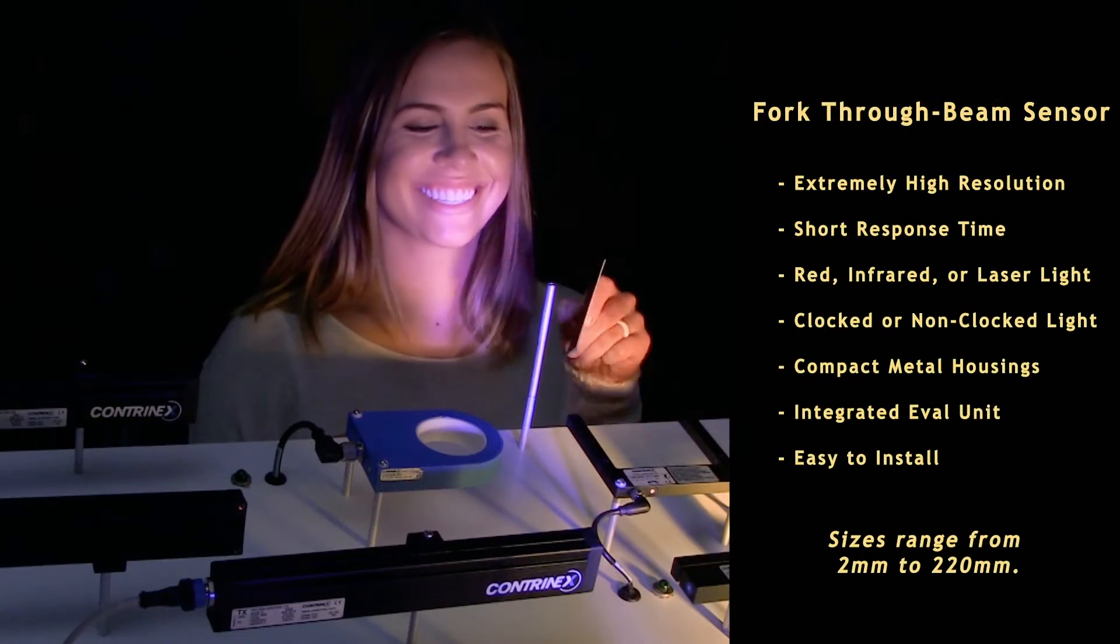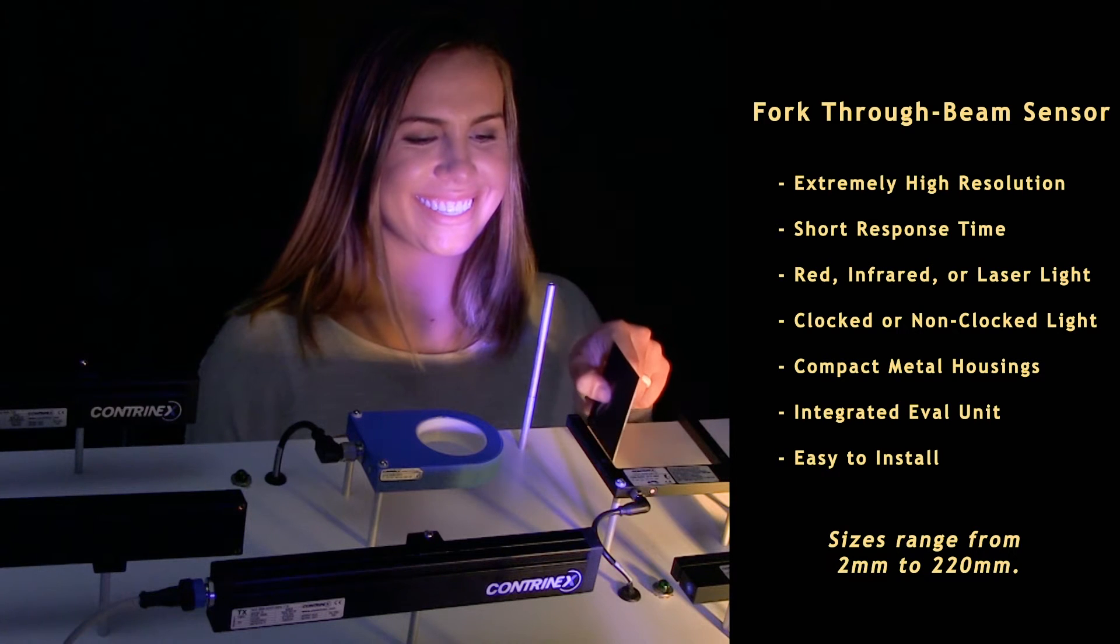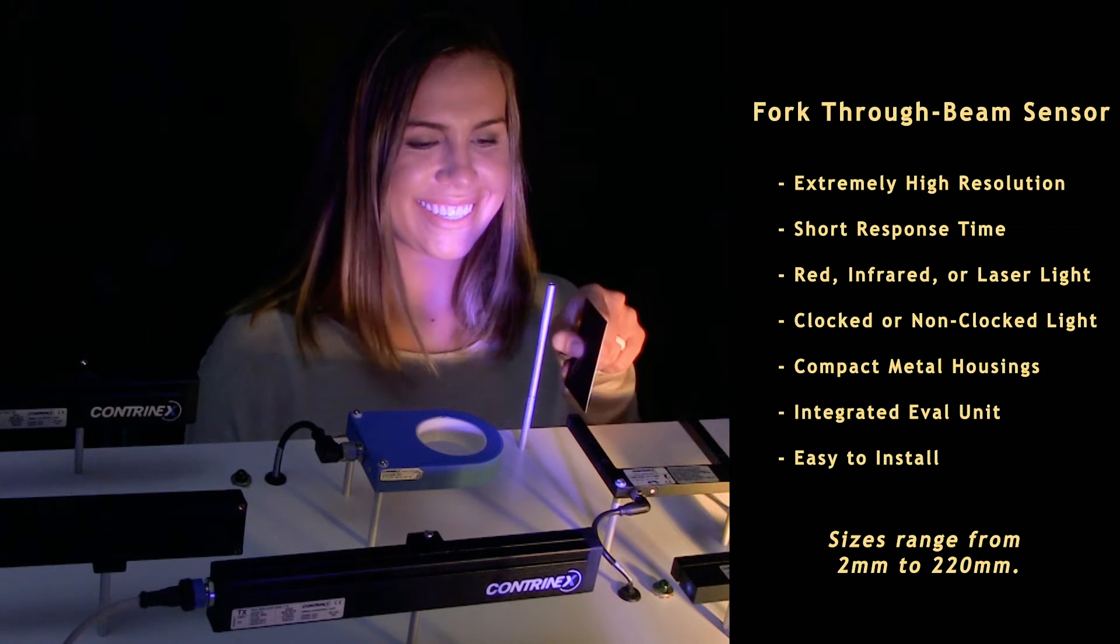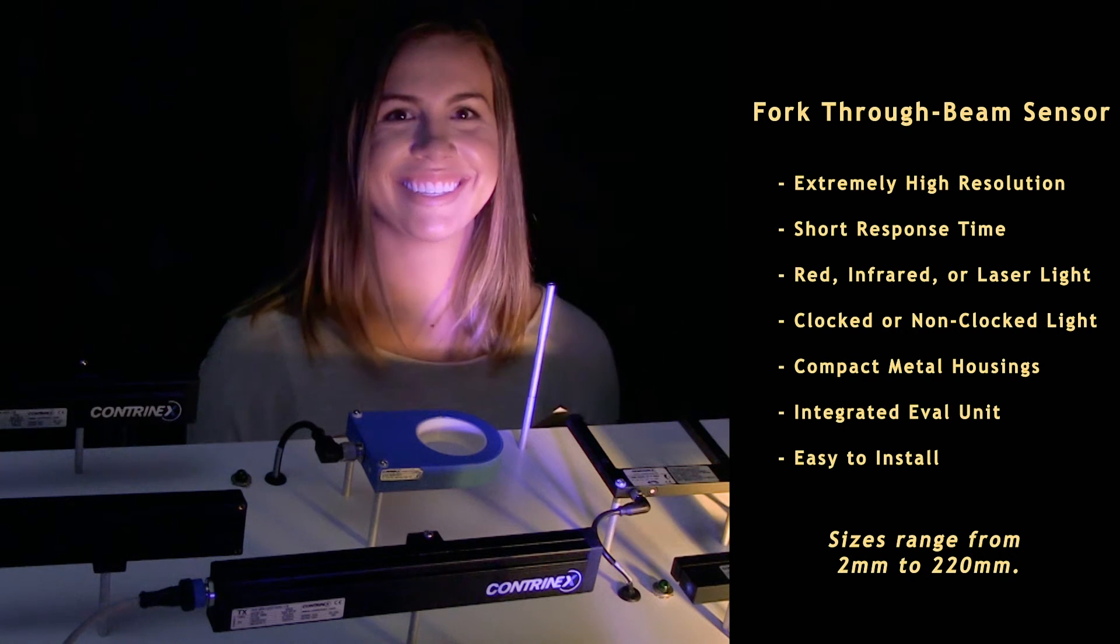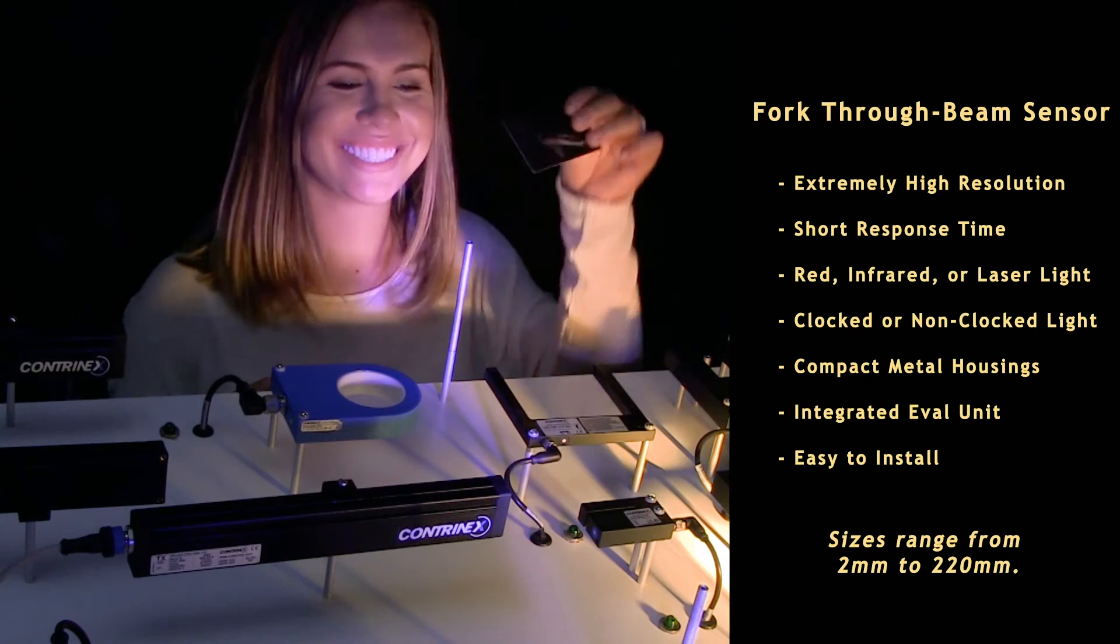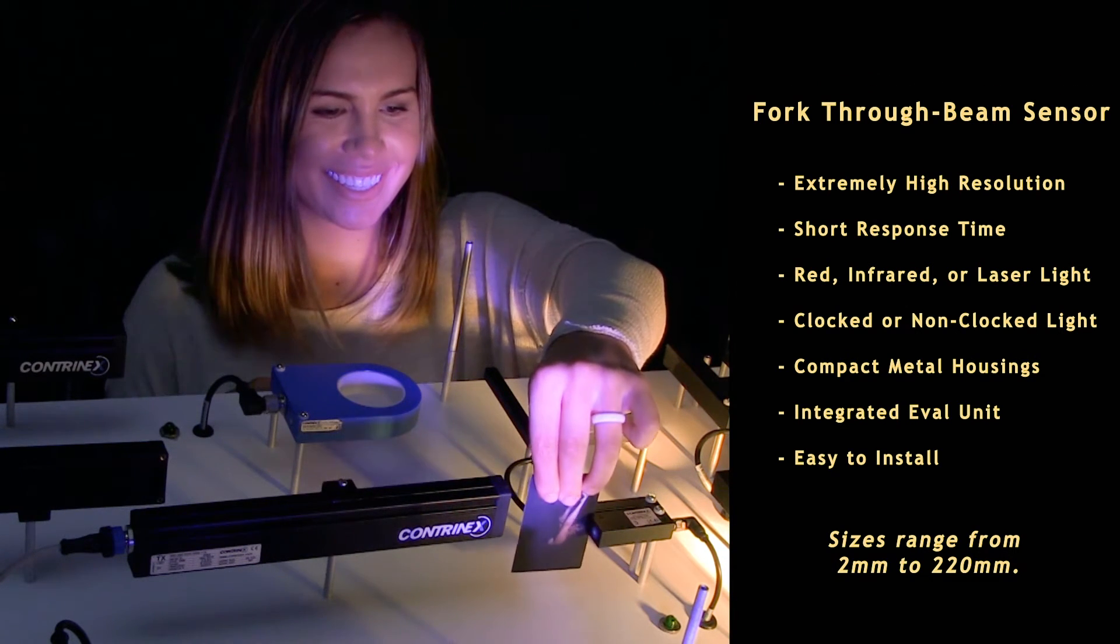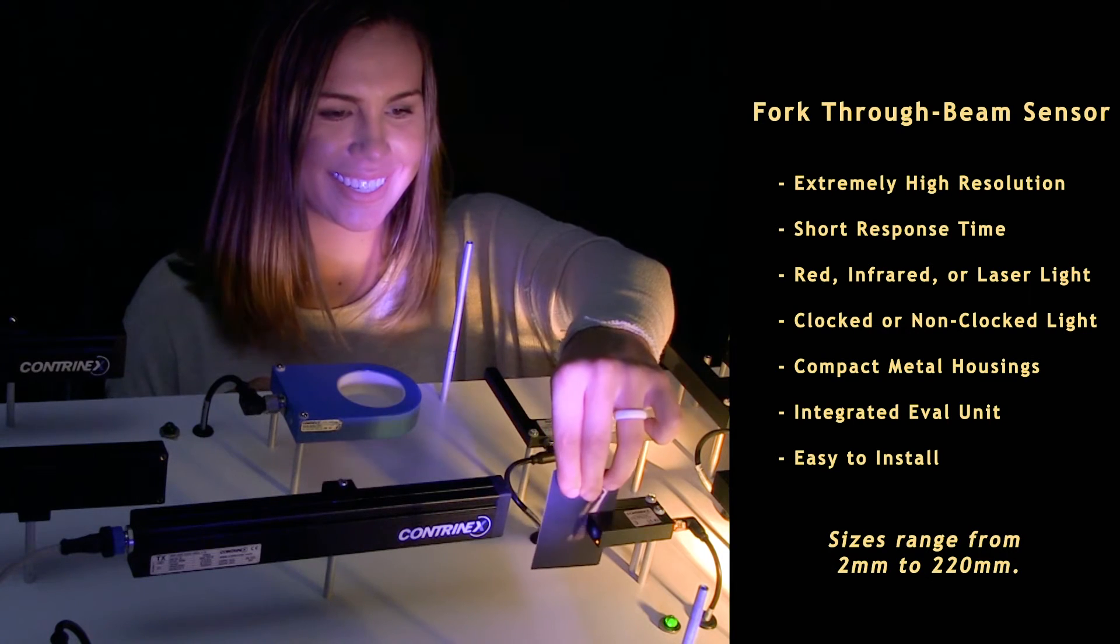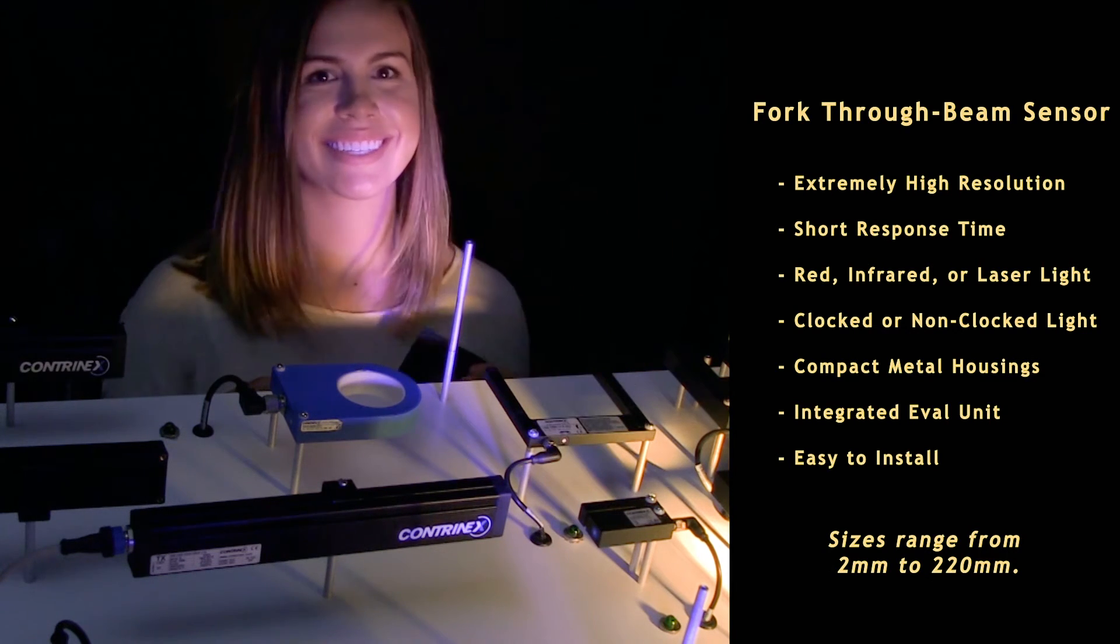The CONTRANEX fork through beam sensors have an advantage over emitter and receiver installations. With the fork through beam sensors, you only need to install one part, run one set of wiring, and never need to worry about mechanical alignment.